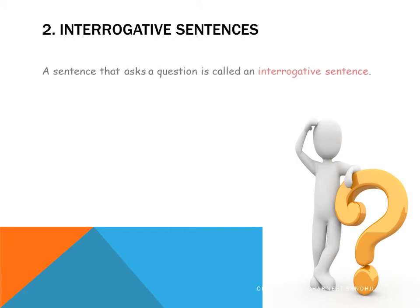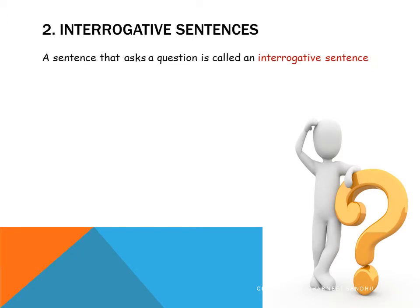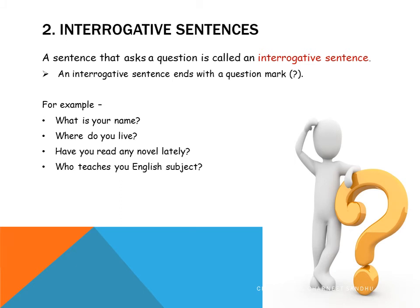Interrogative sentences. A sentence that asks a question is called an interrogative sentence. An interrogative sentence ends with a question mark. Let us look at some examples: What is your name? Where do you live? Have you read any novel lately? Who teaches you English subject? As you can see, in all these sentences something or the other is being asked, so the asking sentences are called interrogative sentences.